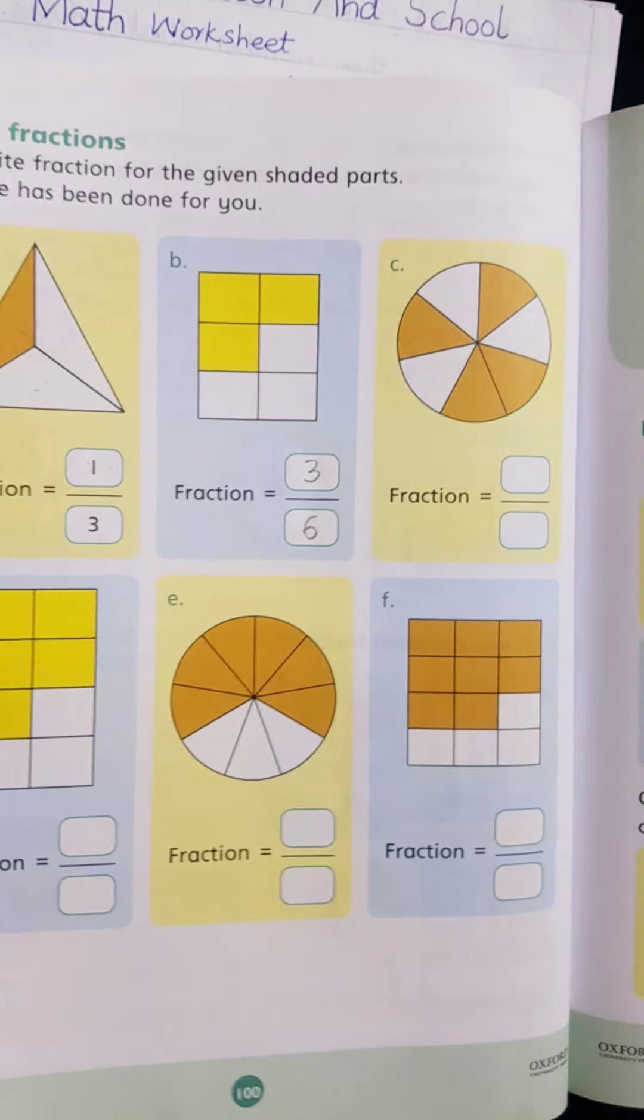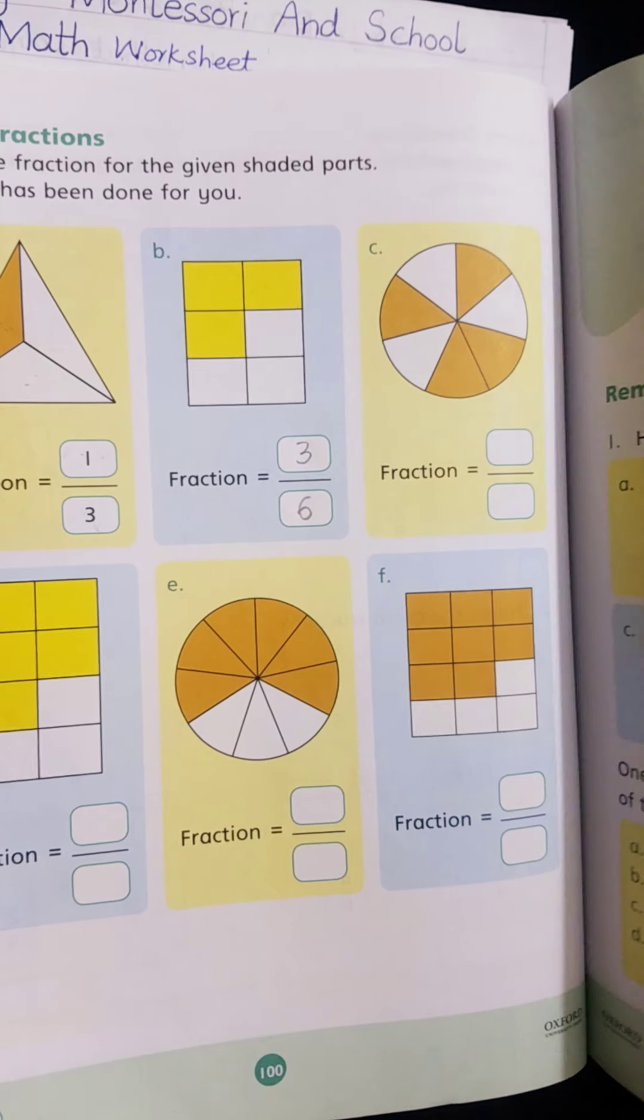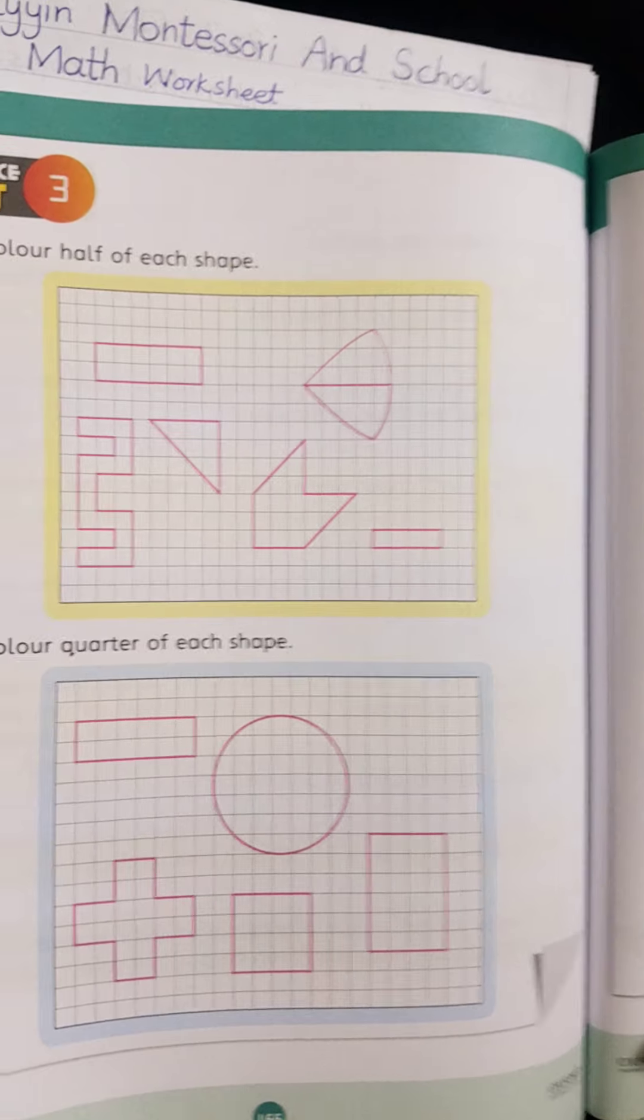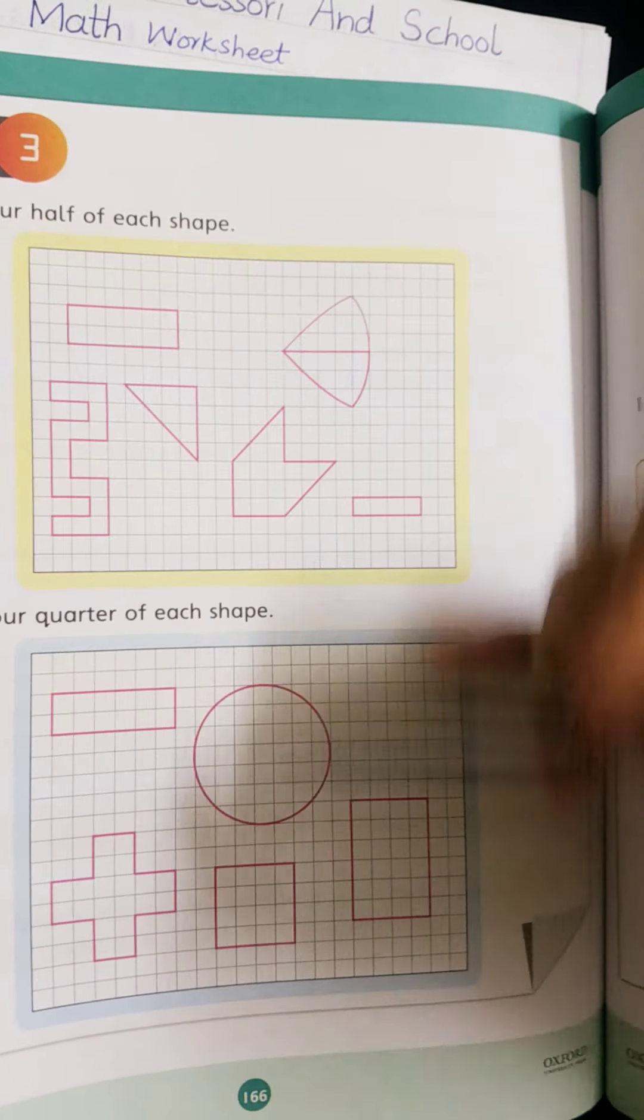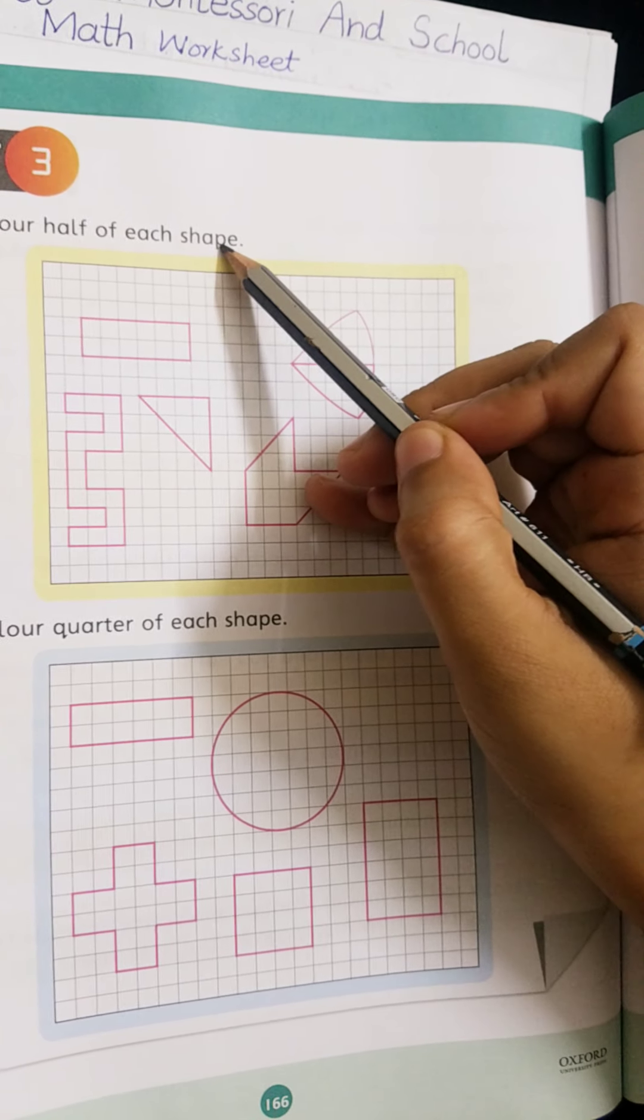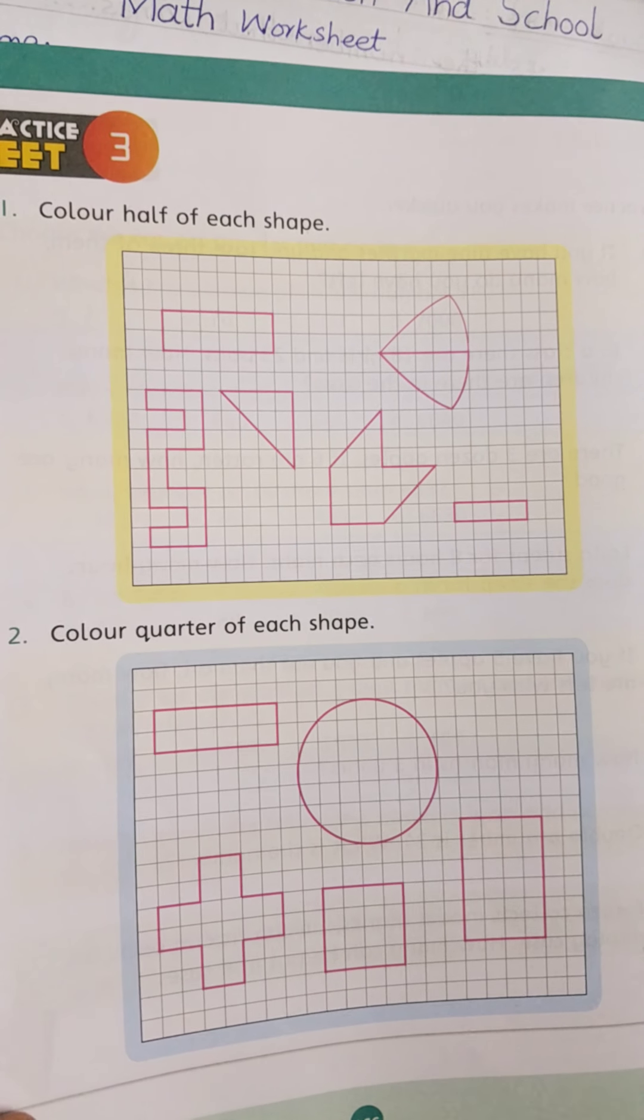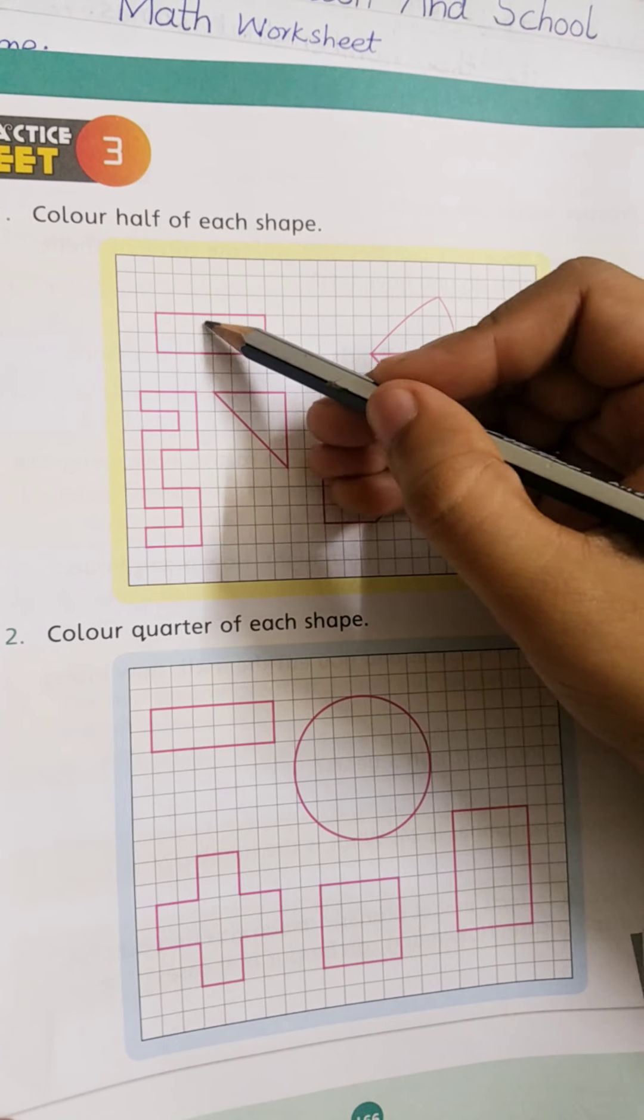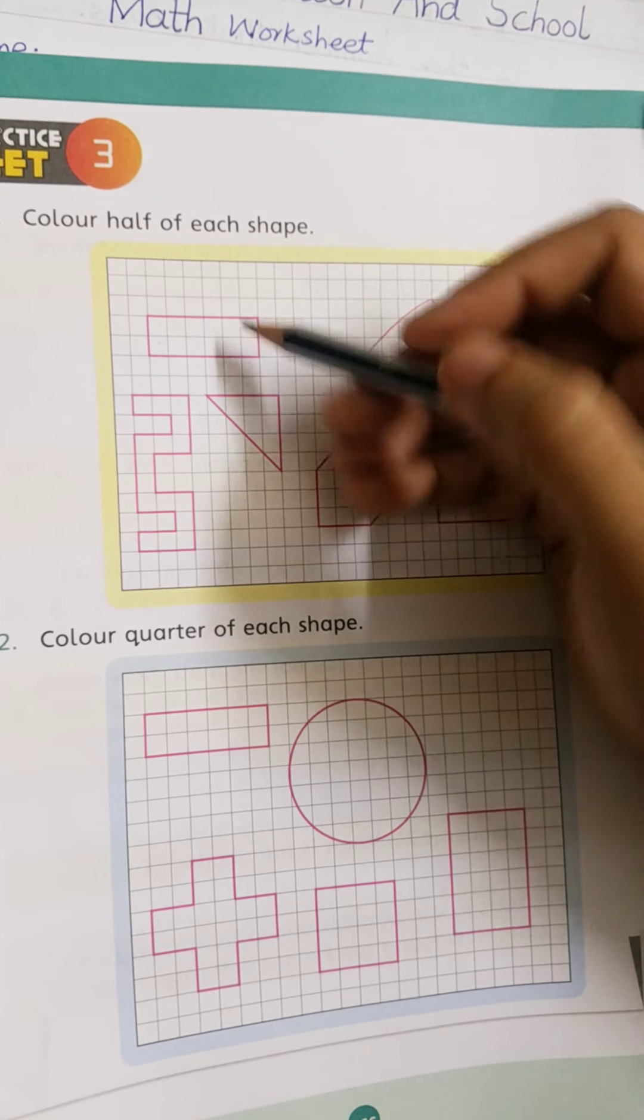Do this question in your book. This chapter is completed here. Complete this chapter carefully and open page number 166, practice sheet 3. Color half of each shape. First is rectangular shape, 1, 2, 3, 4, 5, 6, 7, 8, 9, 10, 11, 12. 12 parts in 6, 6 divide.